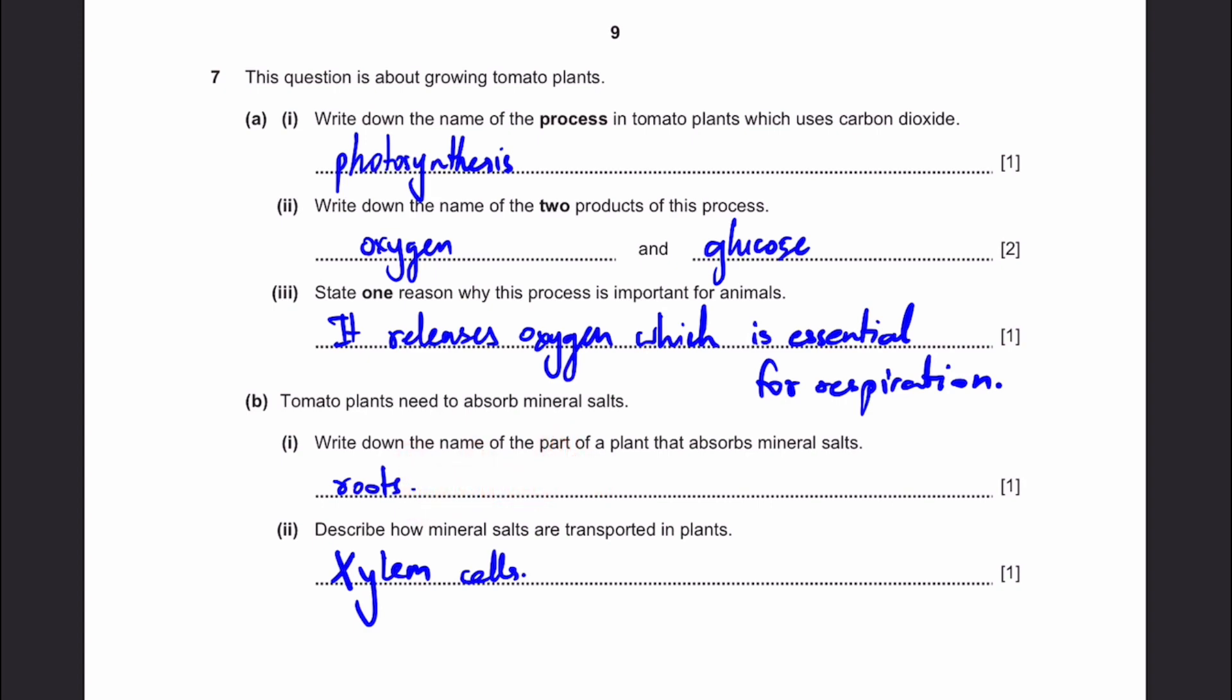Describe how mineral salts are transported in plants. It's simply xylem cells, or you can write it as xylem vessels. Because xylem is the one which transports the water. And water has dissolved mineral salts in it. So we can say that xylem cells are the ones which transport mineral salts. That's the answer.